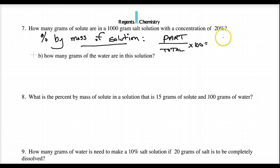Well, percent by mass of a solution means you're going to have a part over total times 100. Now, the part that we're going to deal with, of course, is the mass of the solute over the total mass of the solution, times 100. That's how this works.